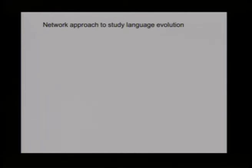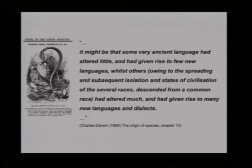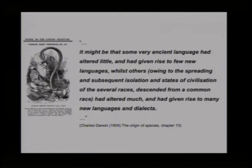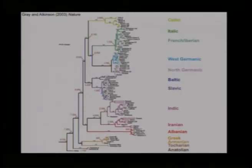Another citation from Darwin: 'It might be that some very ancient language had altered little and given rise to few new languages, whilst others, owing to the spreading and subsequent isolation of several races descended from a common race, had altered much and given rise to many new languages and dialects.' This suggests we might reconstruct a phylogenetic tree of languages. This was done using methods from biology by Gray and Atkinson, and Quentin in the crowd, who reconstructed using a Bayesian approach a phylogenetic tree of Indo-European languages.